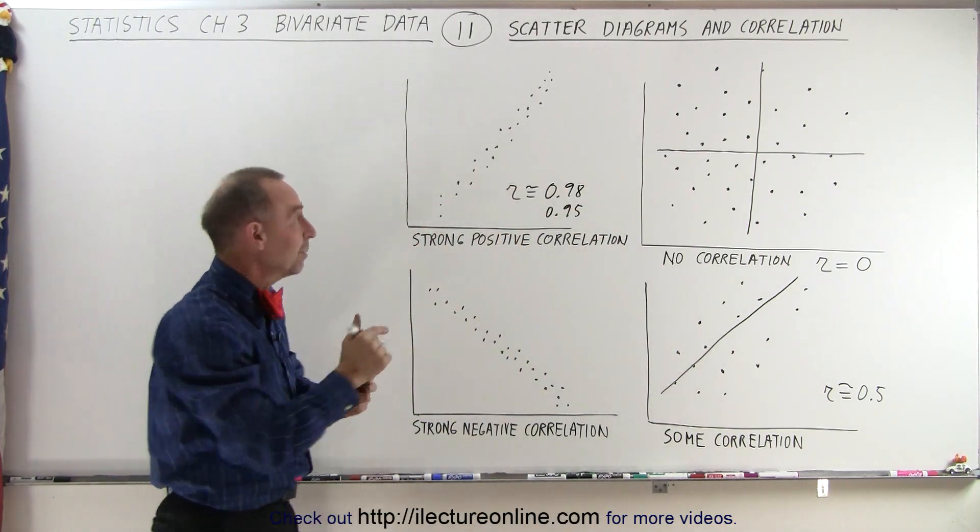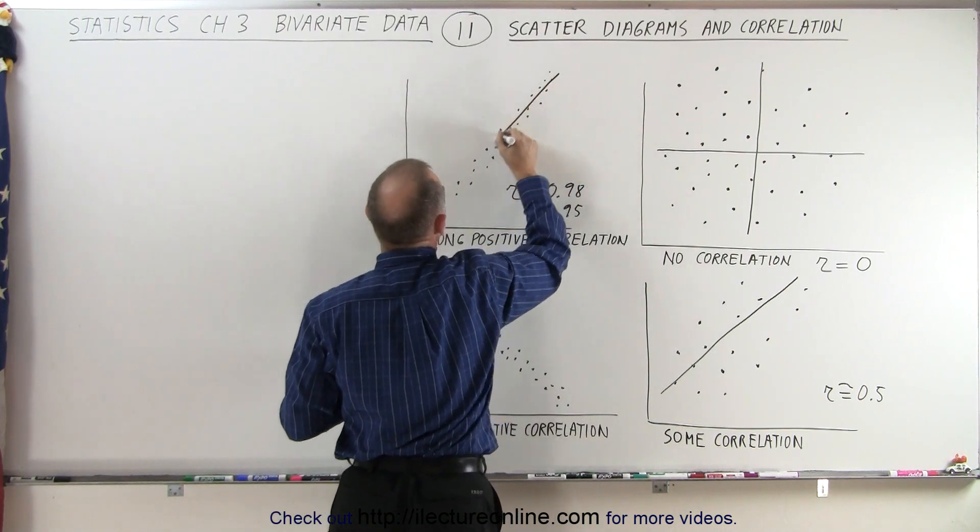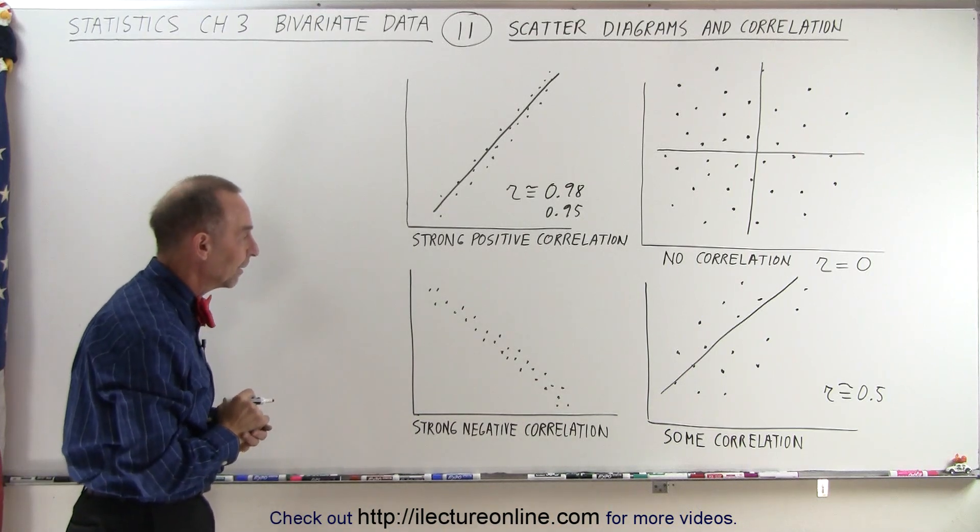It's not a perfect equal to 1 because all the data is not exactly on the line, but you can see if you draw a best fit line here that the data points are very, very closely spaced towards that line.